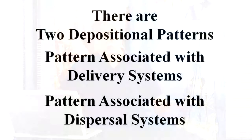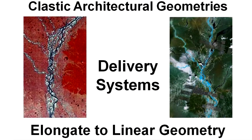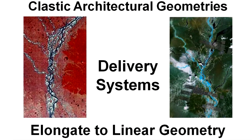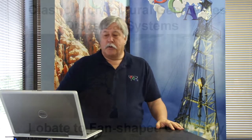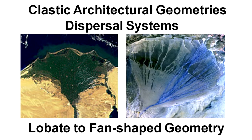Because we're looking at subsurface data, we're going to boil our depositional patterns down to two: the patterns associated with delivery systems, and the pattern associated with dispersal systems. Delivery systems are elongate to linear, and include all of the rivers that transport sediment from their hinterland to the basin. Dispersal systems are all lobate to fan-shaped, and these are the systems that form when the delivery systems reach a basin or a delivery point.